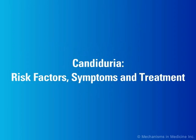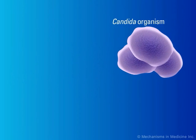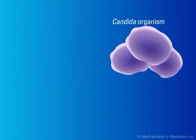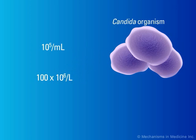Candiduria – Risk Factors, Symptoms, and Treatment. Candiduria refers to the presence of candida organisms in the urine in quantities of at least 10 to the power of 5 per milliliter, or 100 times 10 to the power of 6 per liter.